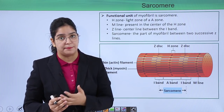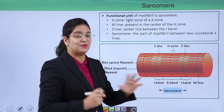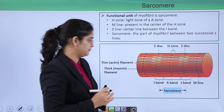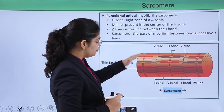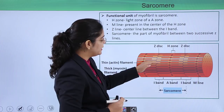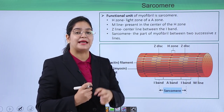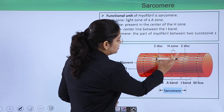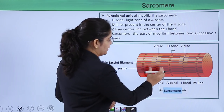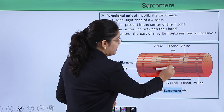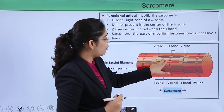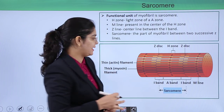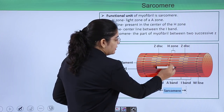This whole structure is an arrangement of thin and thick filaments. These bands decide the functional unit of the myofibril. In this picture, where only the thick filament is present — with no overlapping of thick and thin lines — only the thick red filament is present.